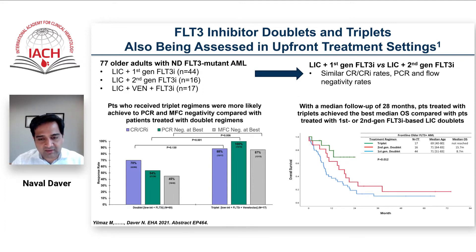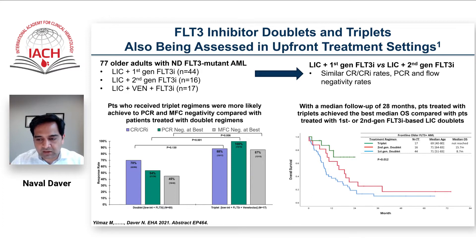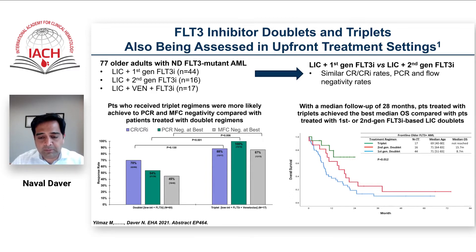The addition of venetoclax really can improve the depth of response in addition to the CRc rates. The survival curve shows that HMA-venetoclax seems to be improving survival. Again, it's early data with small patient numbers, but we do think that this triple therapy combination — done in experienced hands with people who know how to adjust venetoclax, use prophylactic antibiotics and antifungals, and monitor myelosuppression — could be a very effective therapy in the future.